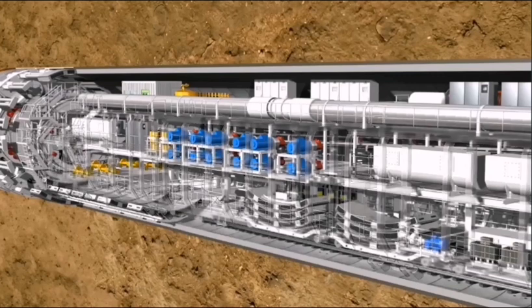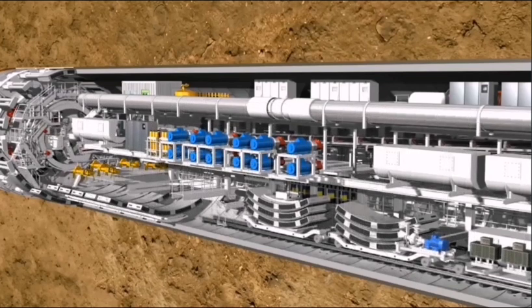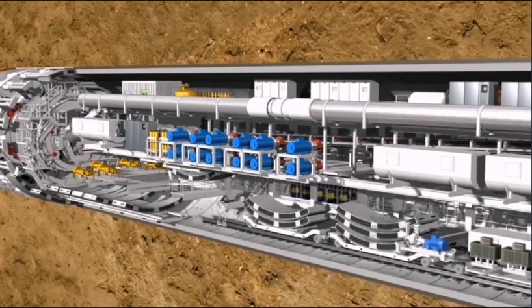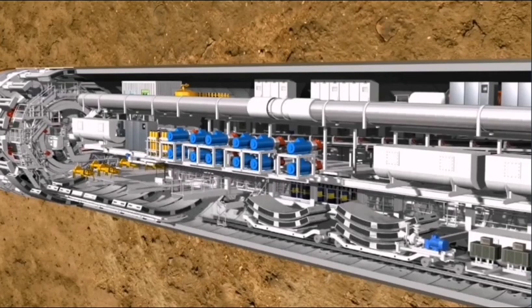In the front section of the backup, the lining segments are lifted individually by a special transfer crane. It lifts them onto the segment feeder which transports the elements to the front of the tunnel.